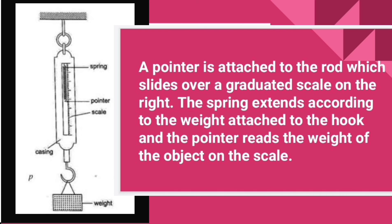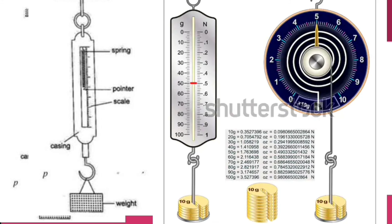The spring extends according to the weight attached to the hook and the pointer reads the weight of the object on the scale. Thus, with the help of the spring balance, we can calculate the weight of the object.